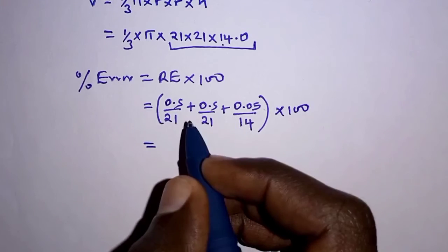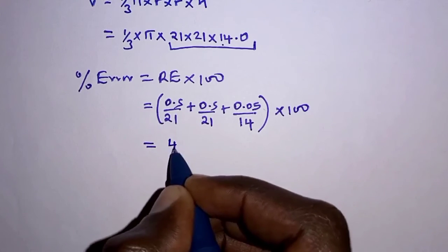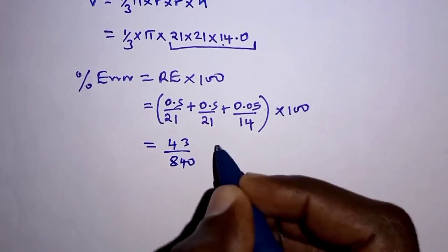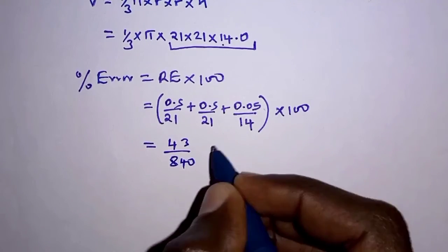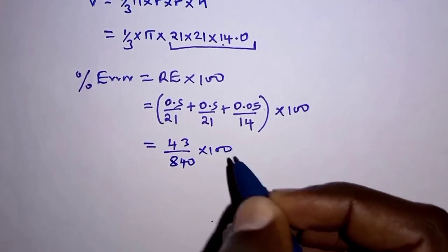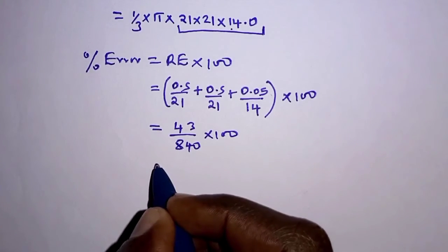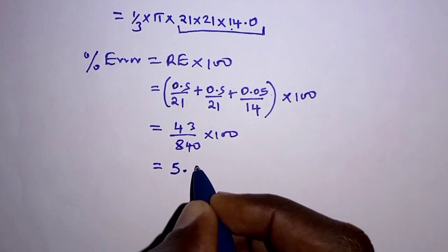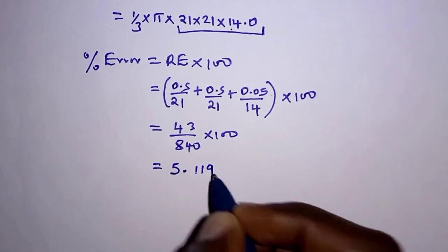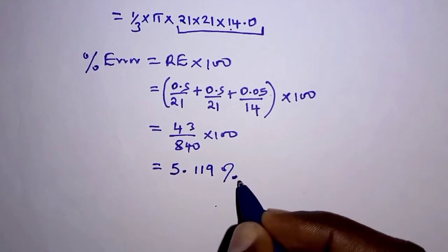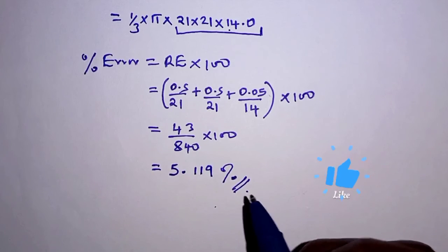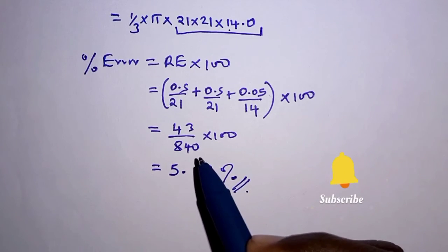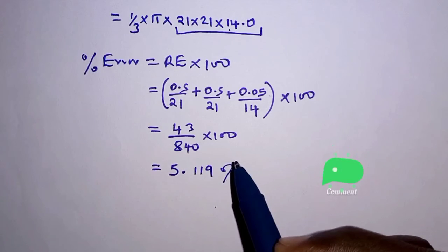For this bracket, we are going to have 43 over 840, which we multiply by 100, and this gives us 5.119%. Thus, we have determined the percentage error in the calculation of the volume of the cone.